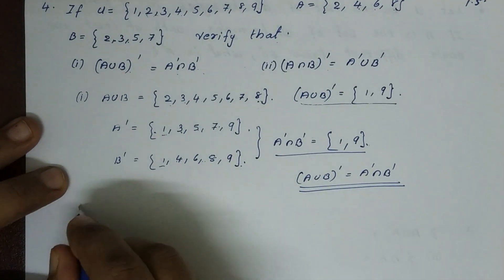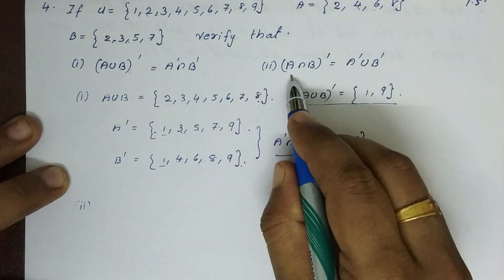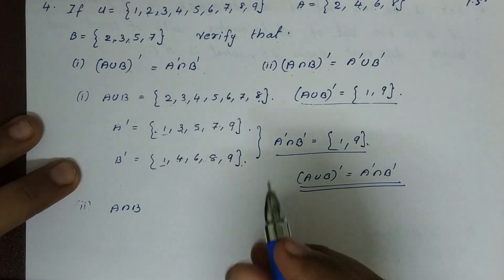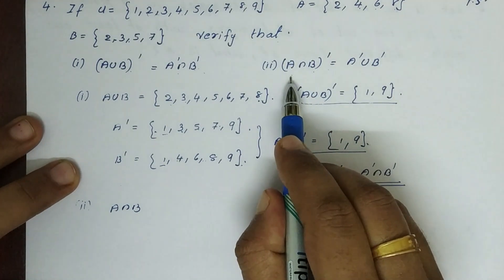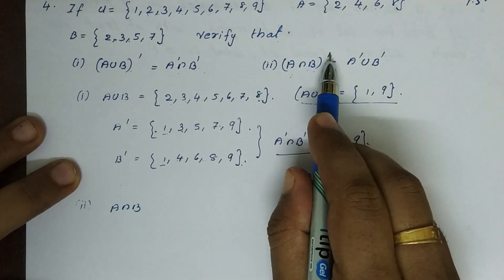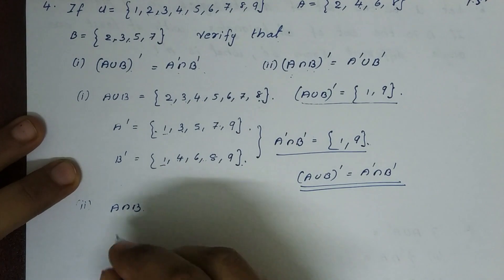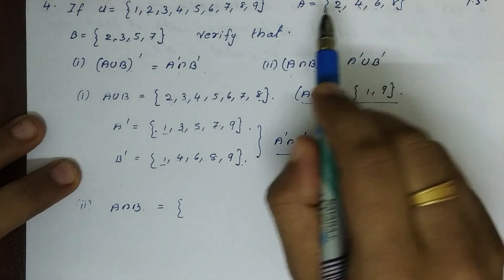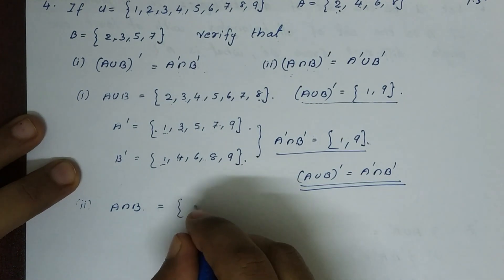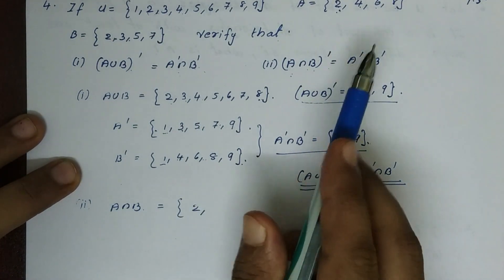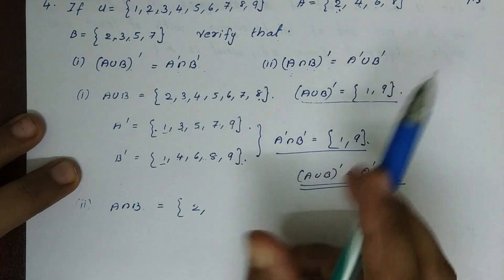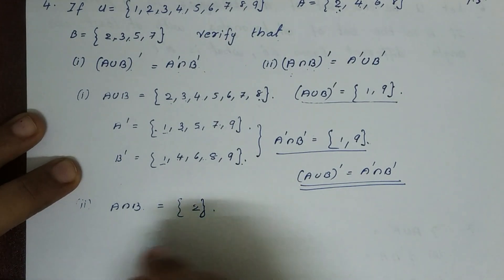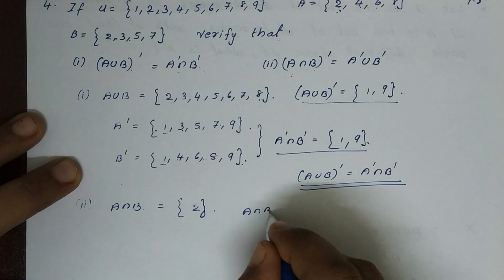The second question is A intersection B complement. A intersection B: the common elements of A and B. A is 2, 4, 6, 8 and B is 2, 3, 5, 7, so A intersection B is the common elements.